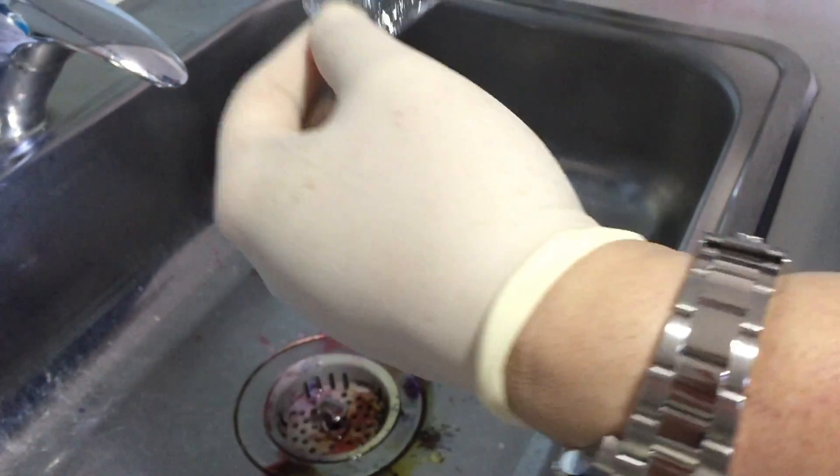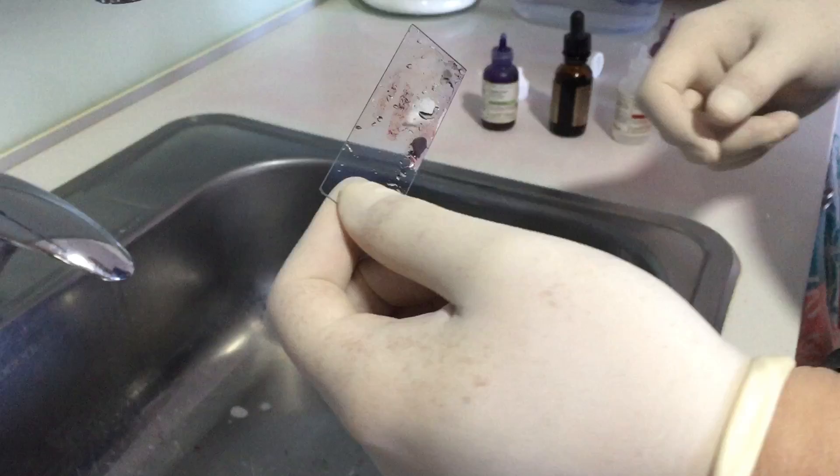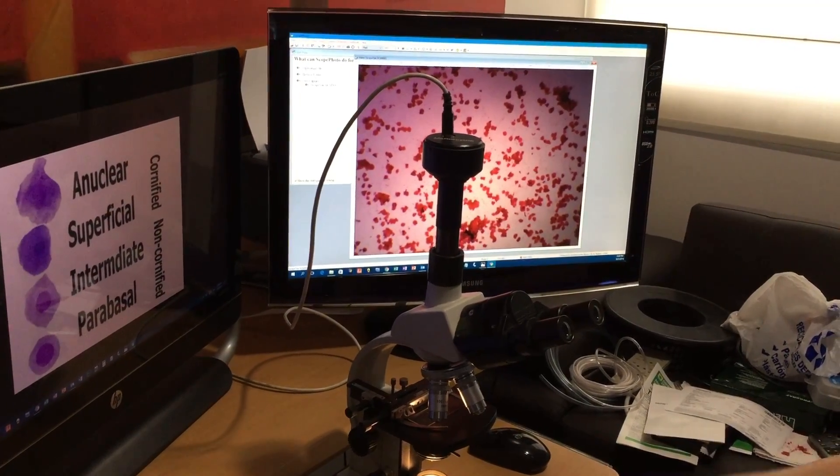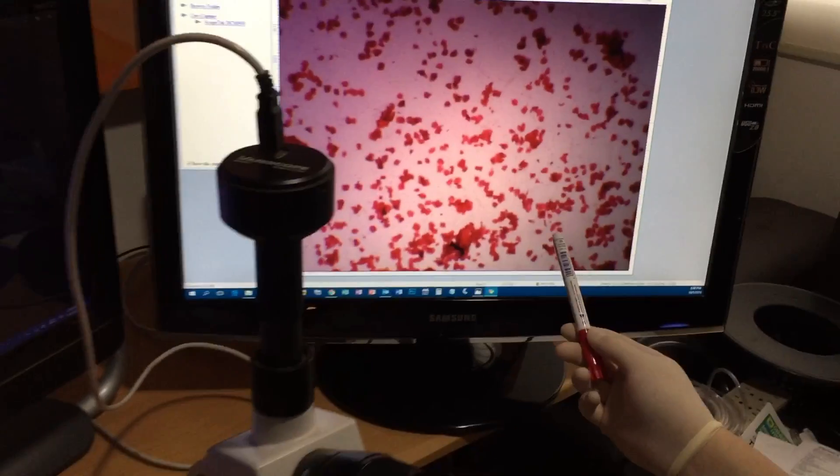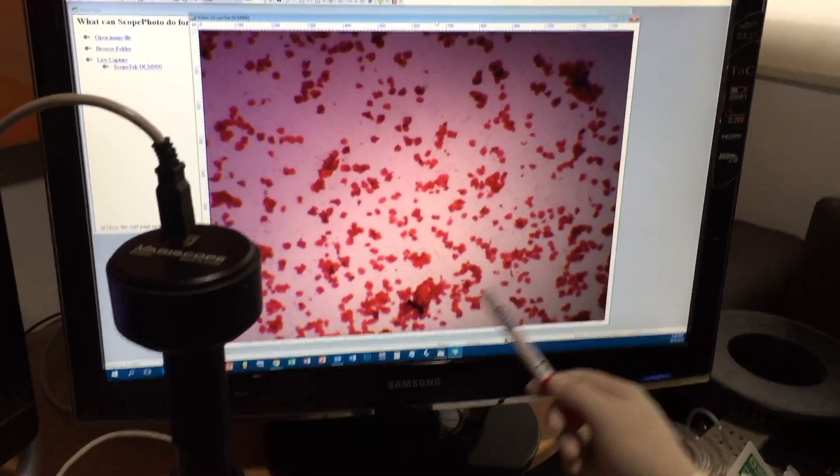Alright, so we have the slide ready. Now let's go look at the third slide. Here we can see that almost all the cells are cornified.